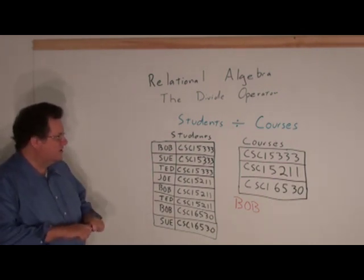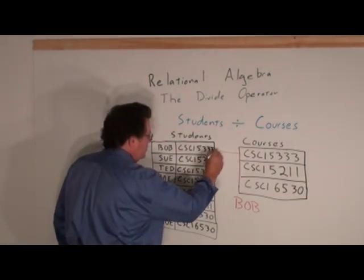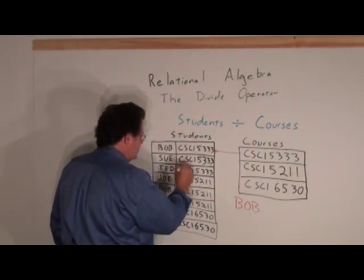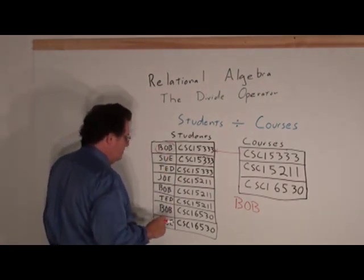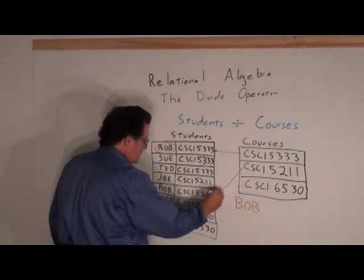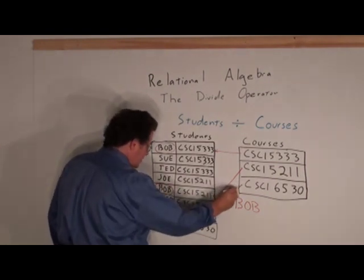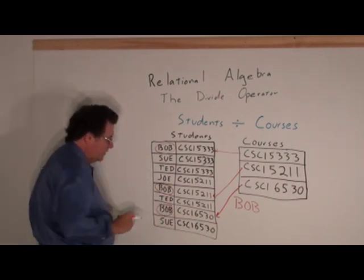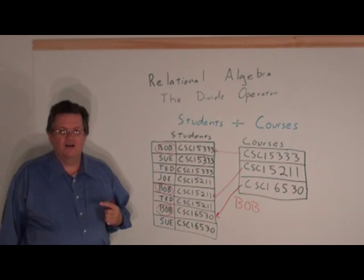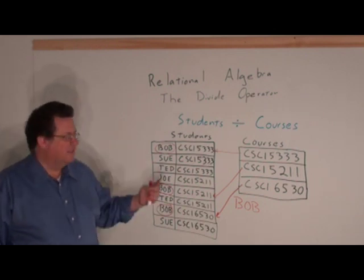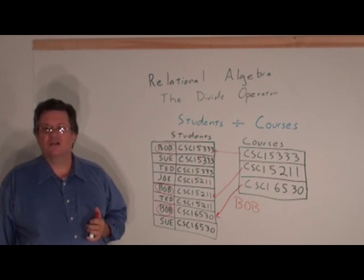So what we do is we look for each class and we look for a particular person in each class. And we see for example, that's how I came up with the solution Bob. Now keep in mind this just happened to work out there was only one student that had taken all the classes.